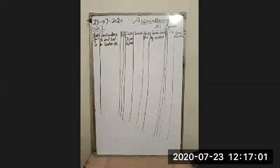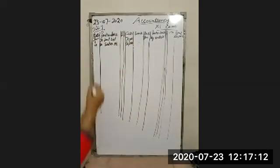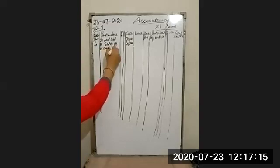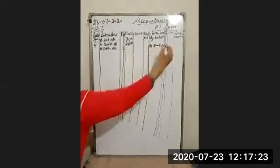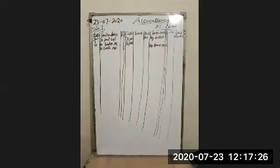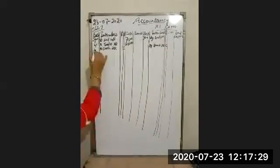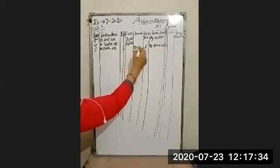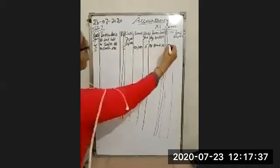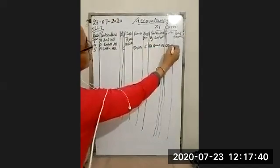Next is cash deposit into bank. Students, this is a contra entry. Cash deposited into bank means bank will increase and cash will decrease. The entry is bank account debit, cash account credit. In the cash book, on the payment side, write 'by bank account' and put the amount in the cash column as 80,000. On the receipt side, write 'to cash account' with the amount in the bank column. Date is January 5th.